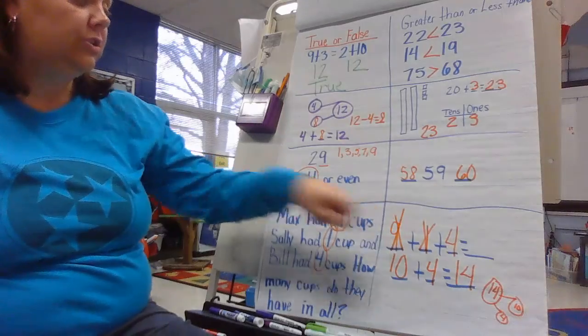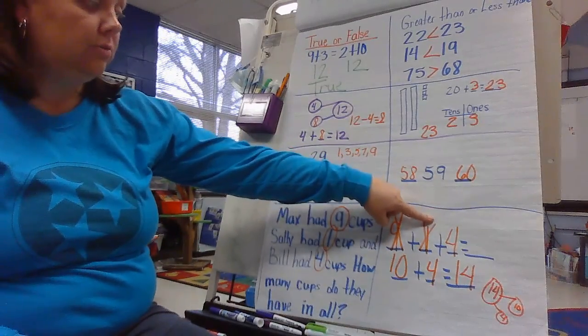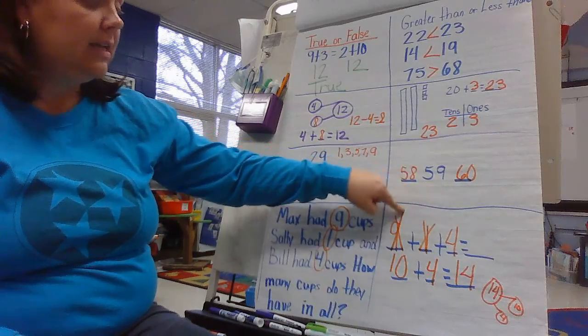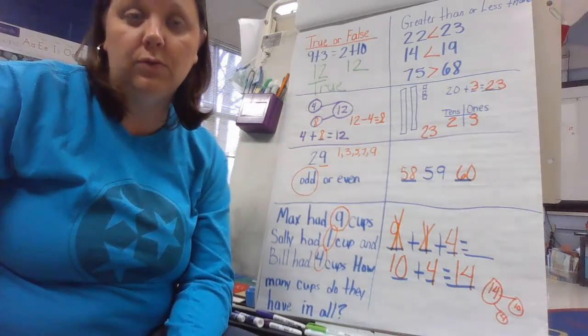If this was very challenging for you and you did not know how to do that, you could draw a number line and you could start at number nine. Then you could hop to number one. And then you could, I'm sorry, hop to number 10, nine plus one. And then you could hop up four more spaces, 10, 11, 12, 13, 14.